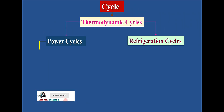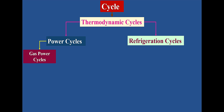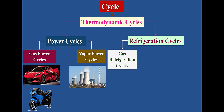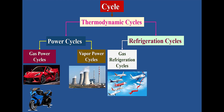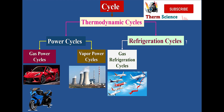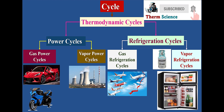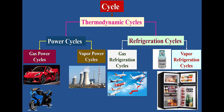Power cycles are further classified as gas power cycle, where the working medium is in gaseous phase throughout the cycle, and vapor power cycle, where the working medium is in two phases: liquid and vapor. Refrigeration cycles are further classified as gas refrigeration cycle, where the working medium is in gaseous phase throughout the cycle, and vapor refrigeration cycle, where the refrigerant is in two phases: vapor and liquid.